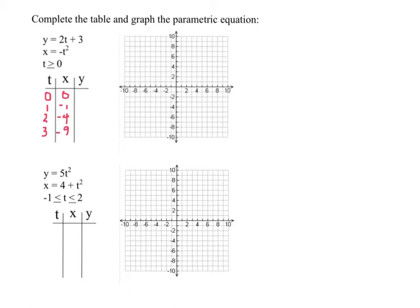Next, the y component is 2t plus 3. So 2 multiplied by 0 plus 3 is 3. 2 multiplied by 1 plus 3 is 5. 2 multiplied by 2 plus 3 is 7. And 2 multiplied by 3 plus 3 is 9.